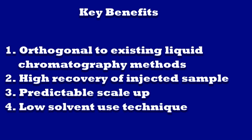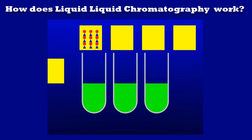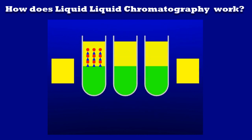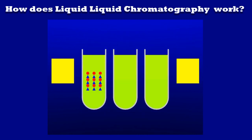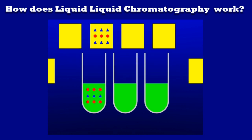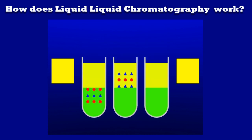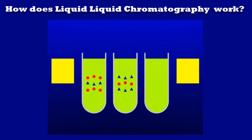High stationary phase retention in the column, typically 75%, leads to low solvent usage. The mechanism of separation — partitioning — is shown by this simple test tube model. This demonstrates that with the correct selection of solvent system, different solutes are retained at differing rates due to the solute's partition coefficient in the solvent system.